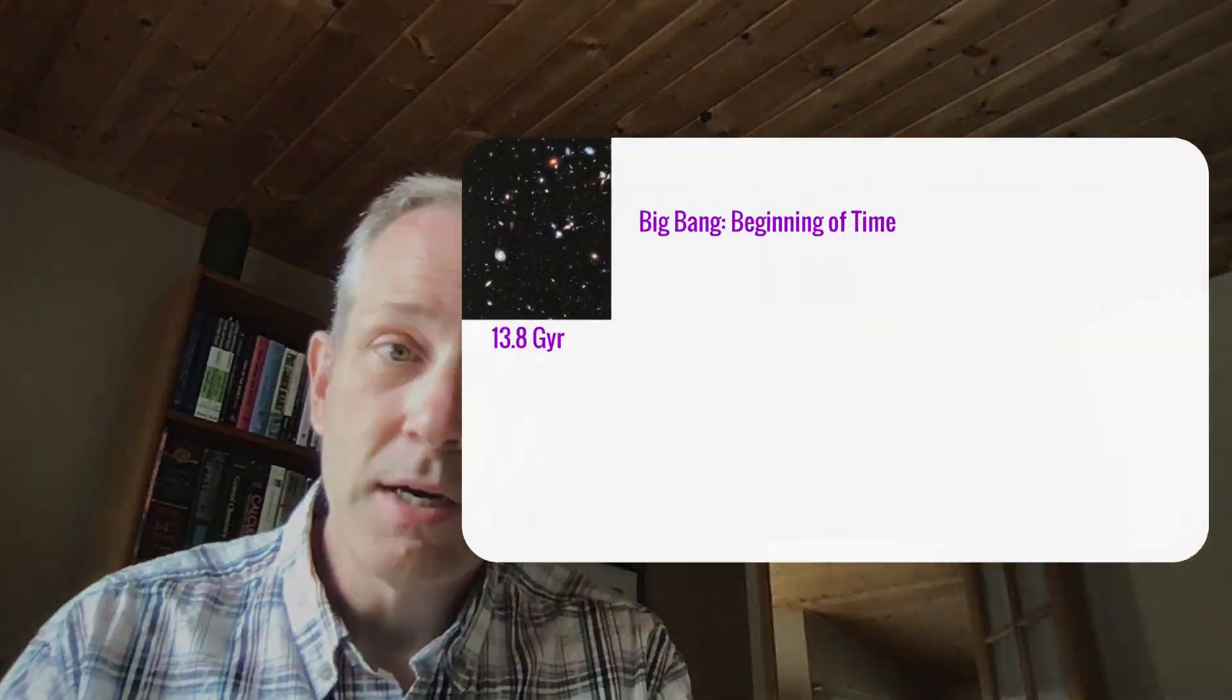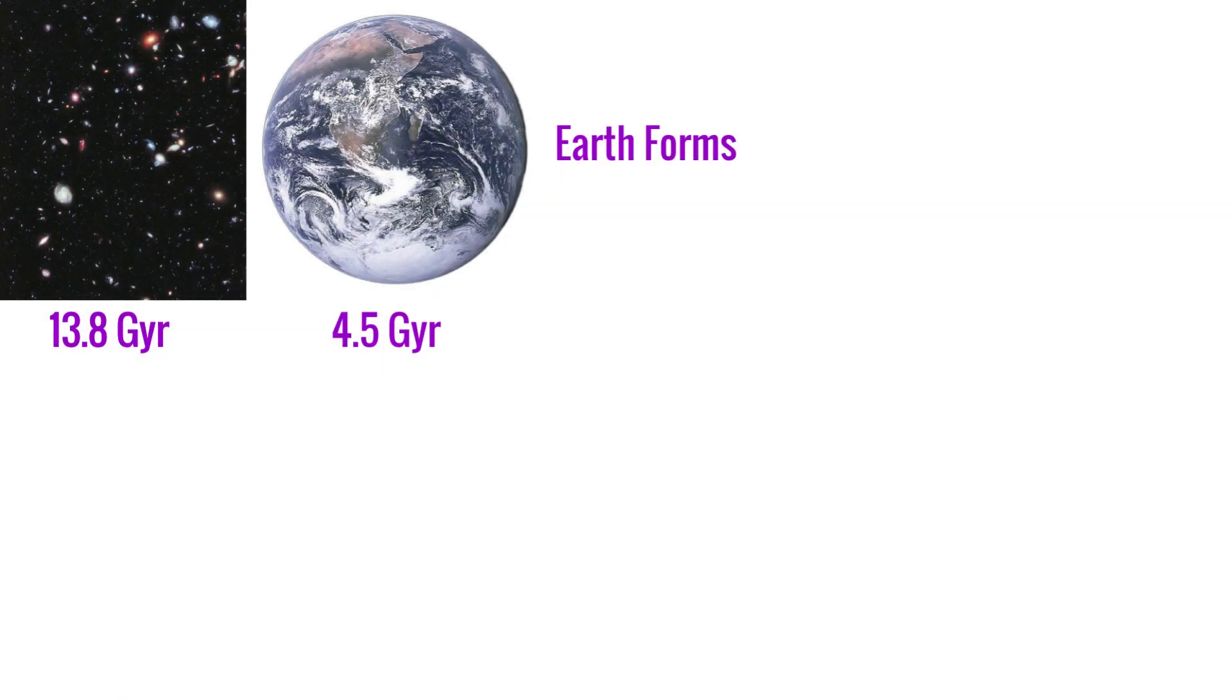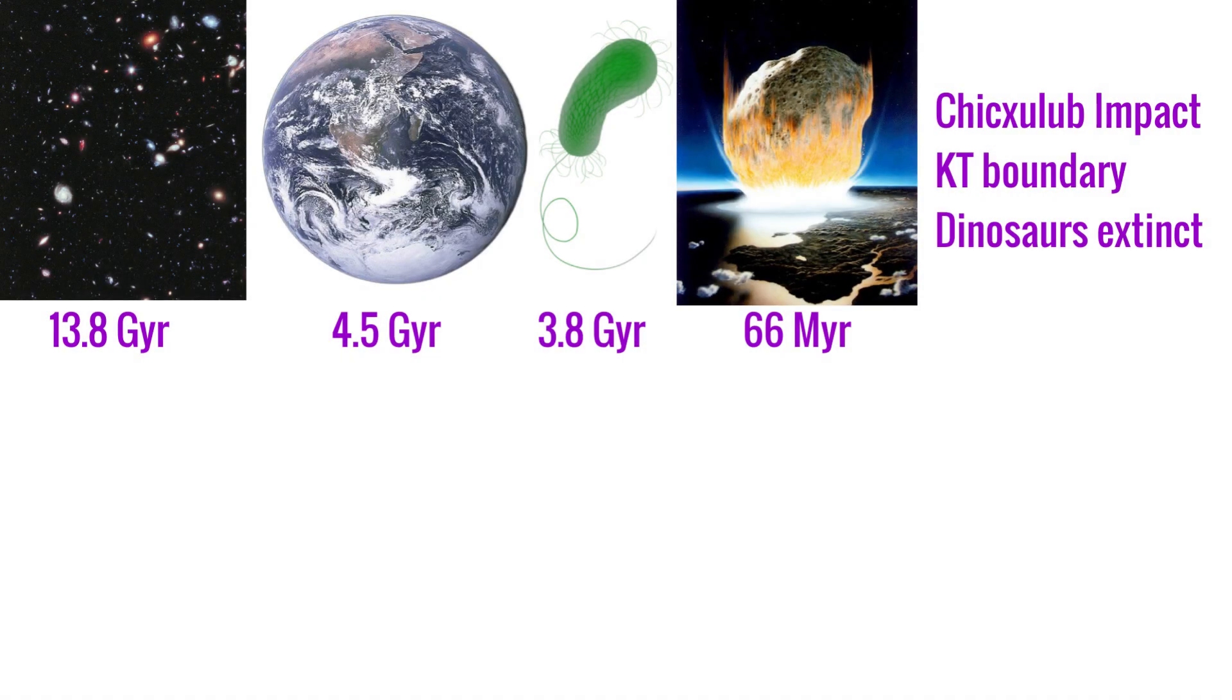We're going to start at the beginning of time, 13.8 billion years ago, and mark some key epochs along the way, like the formation of Earth 4.5 billion years ago, life emerging shortly after that, the beginning of our latest era when the asteroid impact killed the dinosaurs 66 million years ago. This mass extinction event marks a new start to life on Earth.